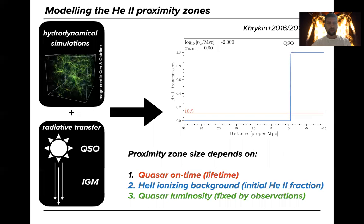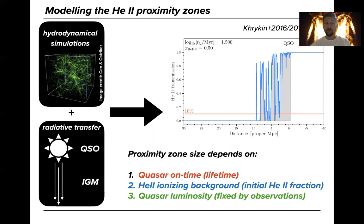For that we use a combination of hydrodynamical simulations and one-dimensional radiative transfer. And this animation shows you how the helium-two transmission spectrum depends on the quasar on-time or quasar lifetime.